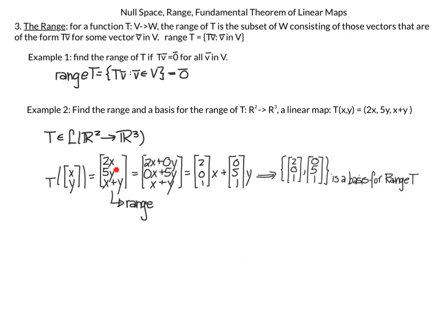To find a basis, I pull out the x's and y's: the x-terms give 2x, 0x, 1x — that's (2, 0, 1) times x. The y-terms give 0y, 5y, 1y — that's (0, 5, 1) times y. These two vectors span the range of T and are linearly independent since they are not scalar multiples of each other. Therefore (2, 0, 1) and (0, 5, 1) is a basis for the range of T.